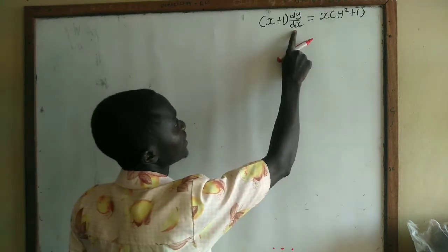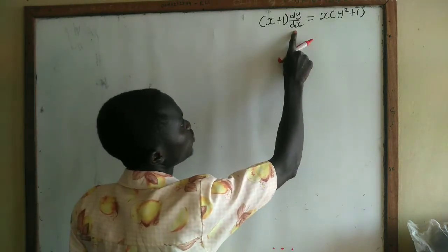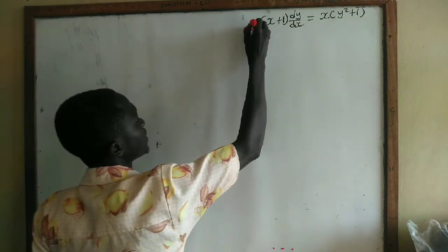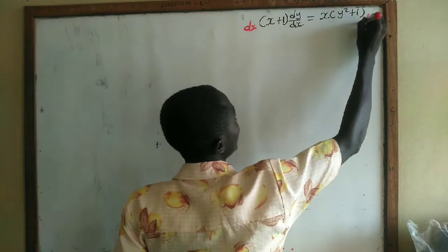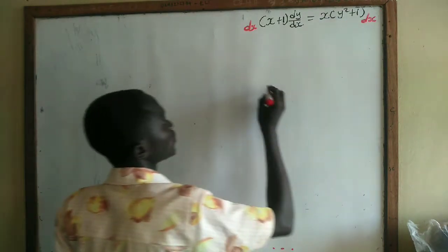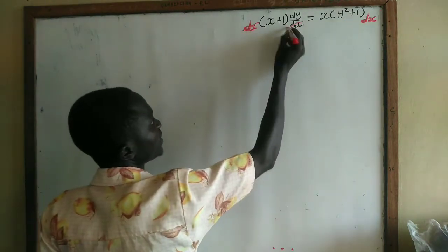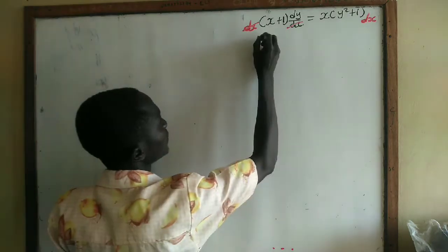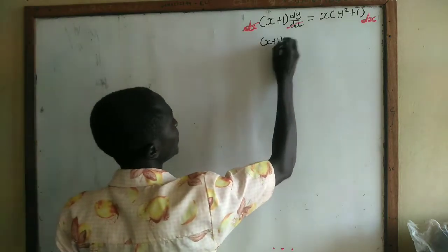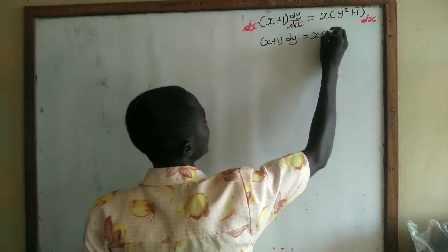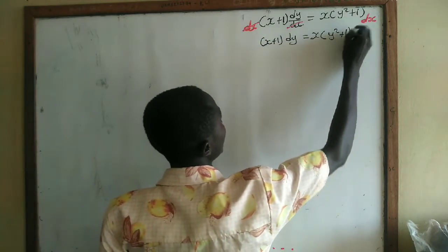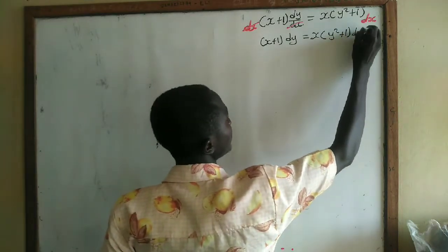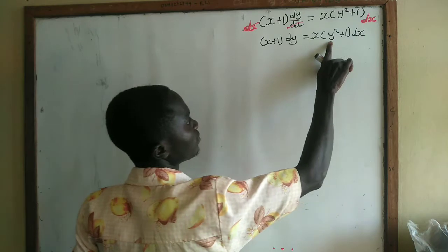So what do we do? We multiply through by dx — we multiply here by dx and we multiply here by dx. The dx cancels, and we are going to have: (x + 1) dy = x(y² + 1) dx.